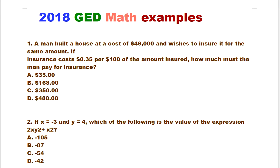So let's begin. Number one: A man built a house at a cost of $48,000 and wishes to insure it for the same amount. If insurance costs $0.35 per $100 of the amount insured, how much must the man pay for insurance? A. $35.00, B. $168.00, C. $350.00, D. $480.00.